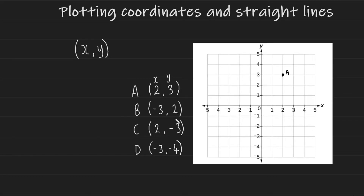Let's look at coordinate B now. My x value is negative three, so I start at zero and go to the left by three — that's where negative three is on the x axis. Then I go up by two, because my y coordinate is two. So my B coordinate should be here.